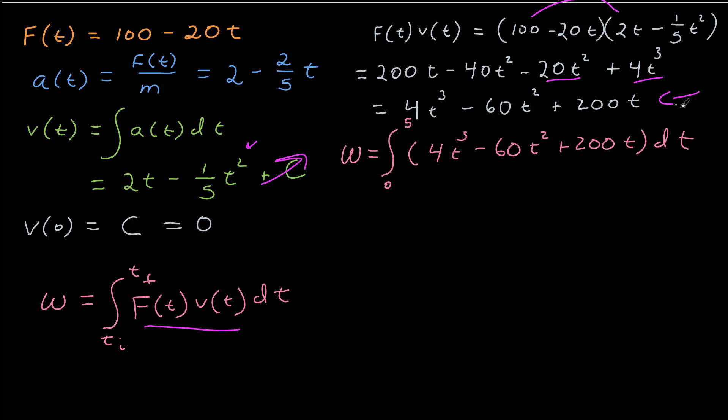And now I can bring that inside to the integral. So now I've got an integral of a simple polynomial. I need the indefinite integral. 4t cubed gives me 4t to the fourth over 4, or t to the fourth. 60t squared is 60t cubed over 3, or 20t cubed. And 200t is 100t squared, evaluated between 0 and 5.